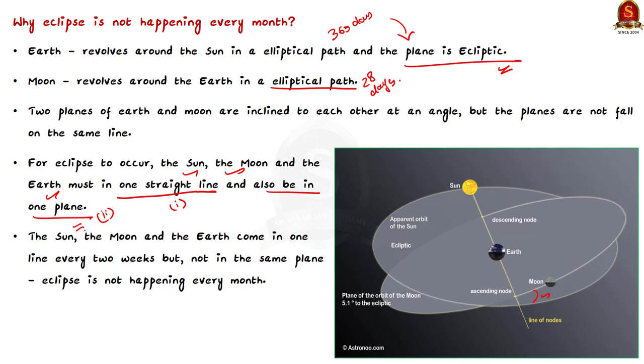Although the sun, moon and the earth come in a single line every two weeks, eclipses do not happen every month. Because, as we saw earlier, the earth's orbit around the sun is not in the same plane as the moon's orbit around the earth.